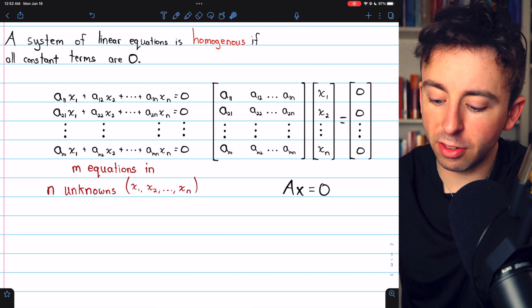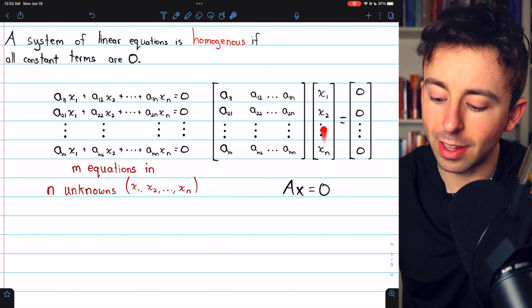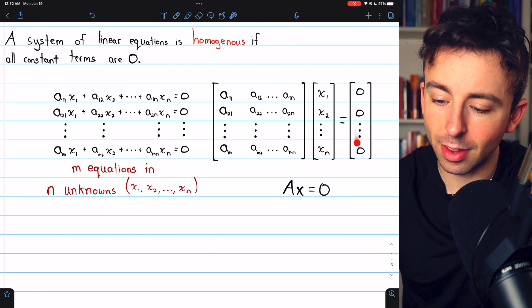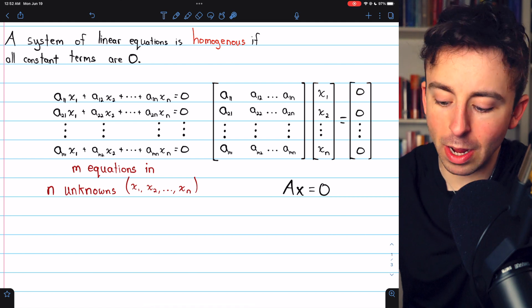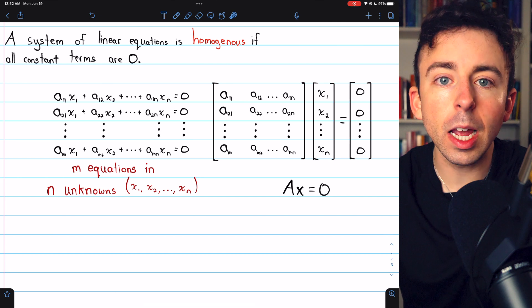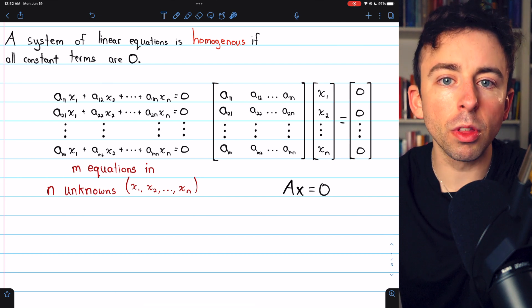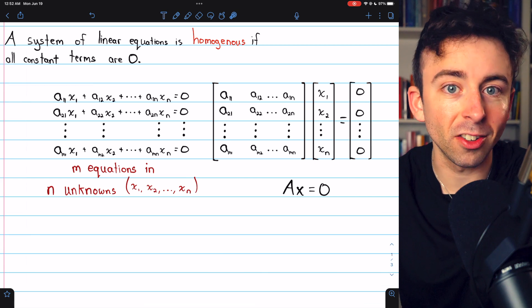A homogeneous linear system can also be written like this with the coefficient matrix multiplied by the solution vector equals the zero vector, which we can write more compactly as Ax = 0. Let's talk a bit about the types of solutions there are to homogeneous linear systems, and then we'll go through three examples of solving such a system.